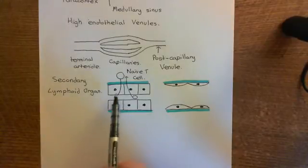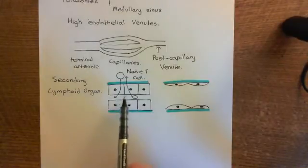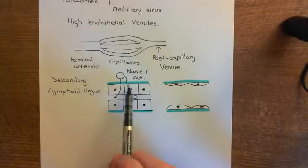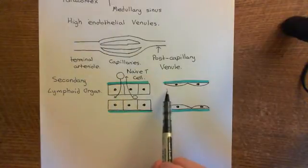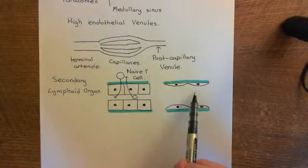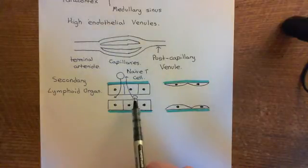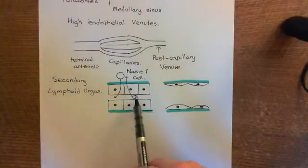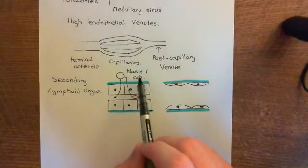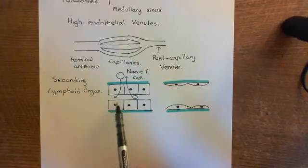It's these high endothelial venules, so named because the endothelial cells are very tall, unlike the usual squamous endothelial cells that most post-capillary venules have, that are involved in moving the naive T-lymphocytes out of the blood and into the lymph node, and also out of the lymph node and back into the blood.